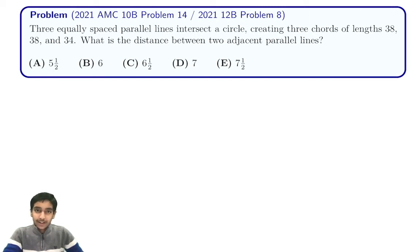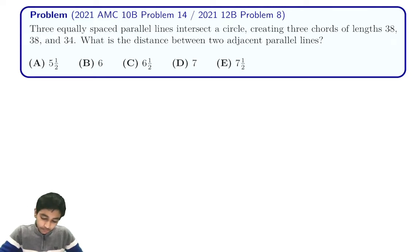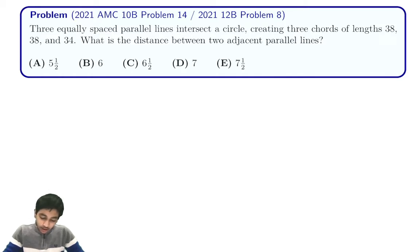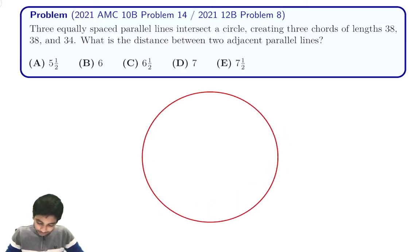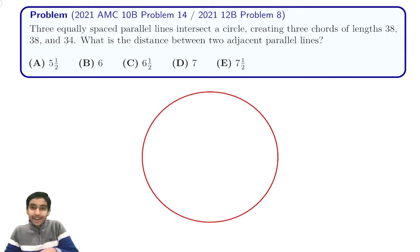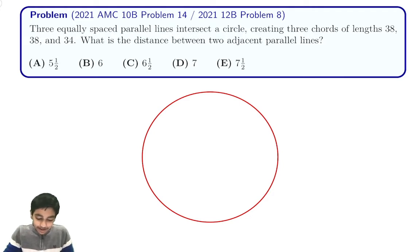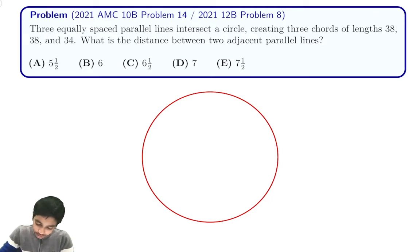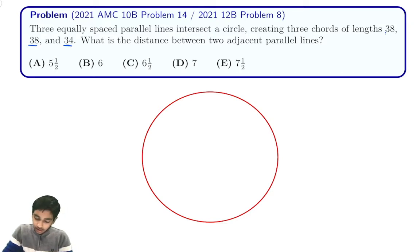In this video we're going to explore the solution to the 2021 AMC 10B problem 14, which was also the 2021 AMC 12B number 8. We have a circle with three equally spaced parallel lines creating three chord lengths of 38, 38, and 34. The question asks for the distance between adjacent parallel lines.